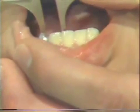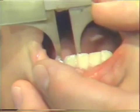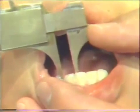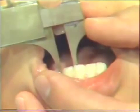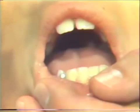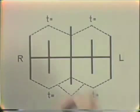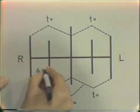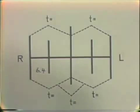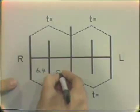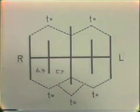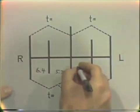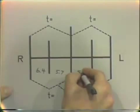We're measuring at the widest mesial distal diameter, placing the Bowley gauge so that it goes down the long axis of the tooth. The width of the lower right lateral incisor is 6.4 millimeters. The right central incisor width is 5.7 millimeters. On the left, the left central incisor is 5.4 millimeters, and the left lateral incisor is 6.2 millimeters.